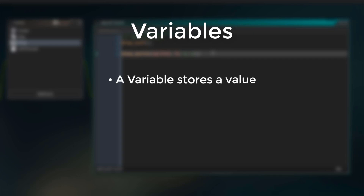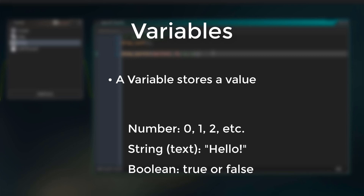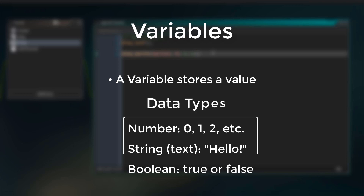A variable stores a value. The value can be a number, a string which is simply some text, or a boolean which is a true or false value. So these are all data types.